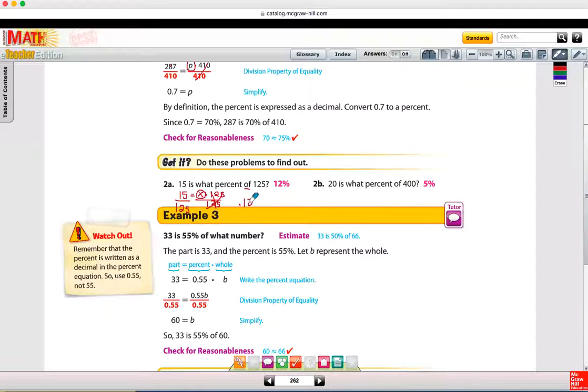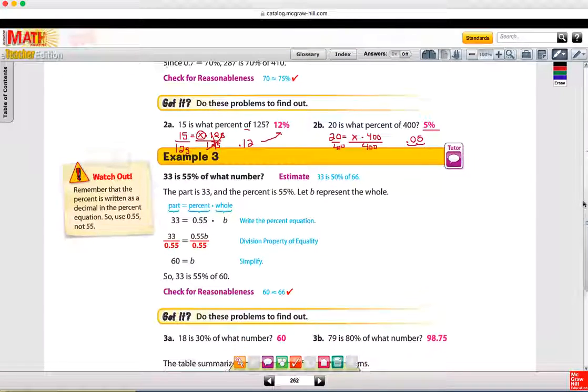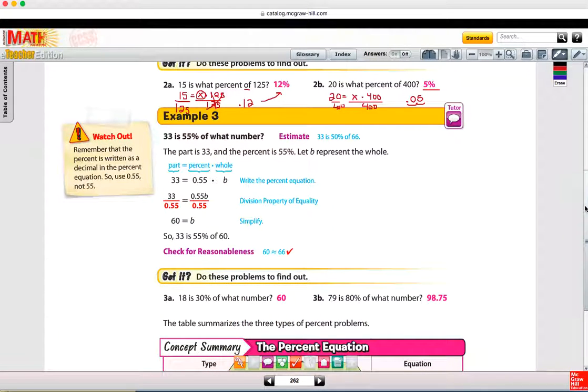For 2B, we get 20 is what percent of 400? When you divide both sides by 400, we get 20 divided by 400, which is 0.05. And to change that to a percent, we're going to move it over two places, or multiply by 100 to get 5%. For example 3, maybe you've already guessed it, we've solved for the percent, and we've solved for the part. And so in example 3, we're going to solve for the whole.